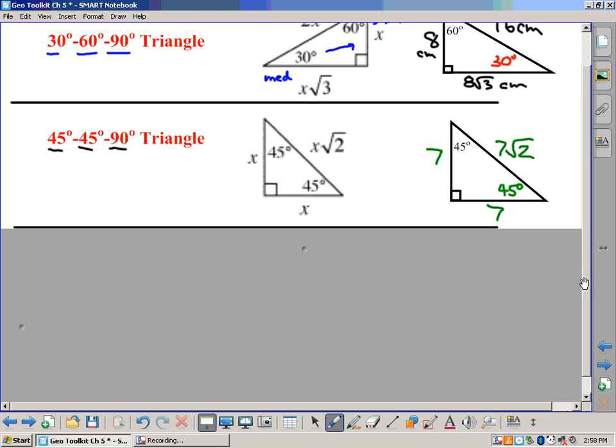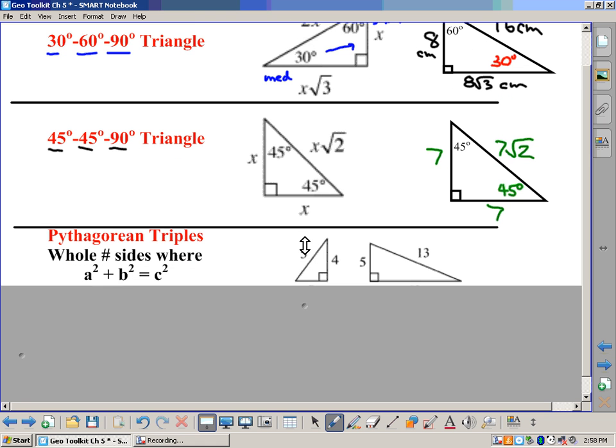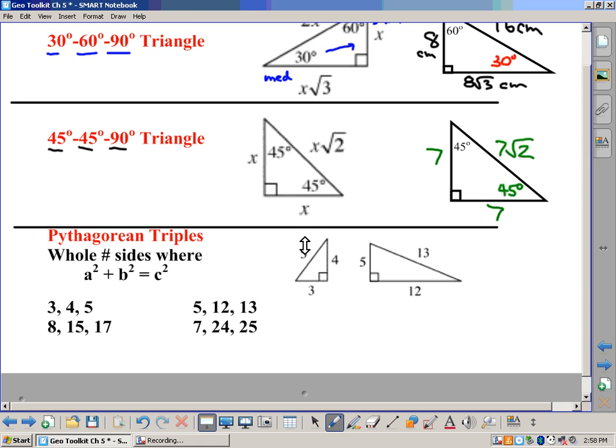And then finally, the last bit of special right triangles we have is what we call Pythagorean triples. Now, Pythagorean triples, basically, as we know from the Pythagorean theorem, it's whole number sides where A squared plus B squared equals C squared. So, for instance, if we had a 3-4-5 triangle, that means 3 squared plus 4 squared equals 5 squared.